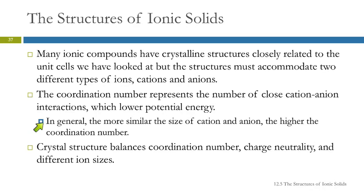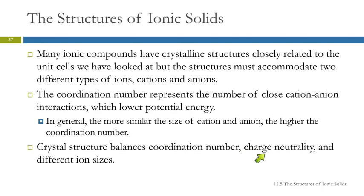In general, if the cation and anion are similar in size, you're going to have a higher coordination number than if one of them is much larger than the other. Crystal structures have to balance coordination number — trying to maximize it — while also maintaining charge neutrality and accommodating different ion sizes.